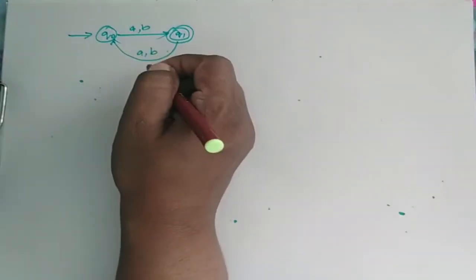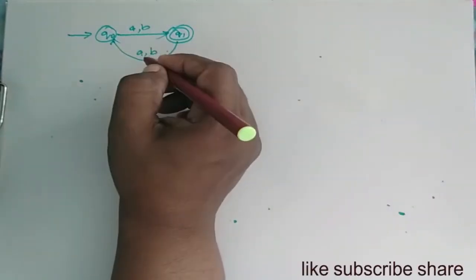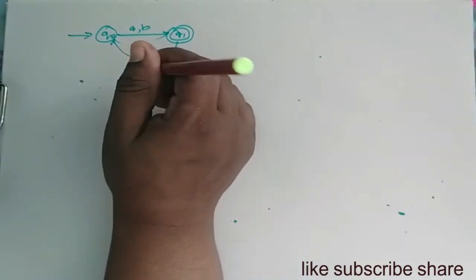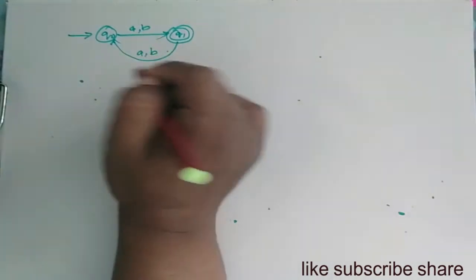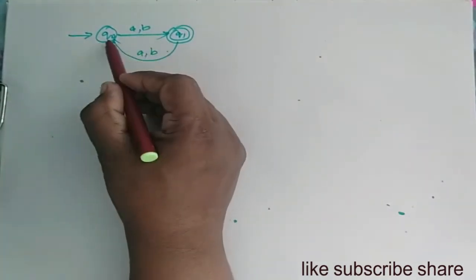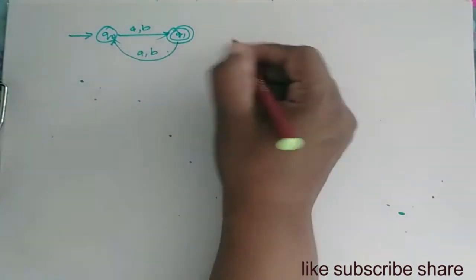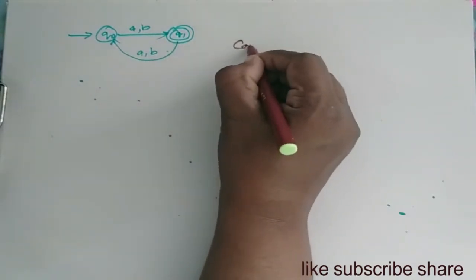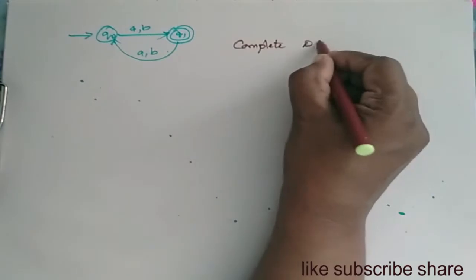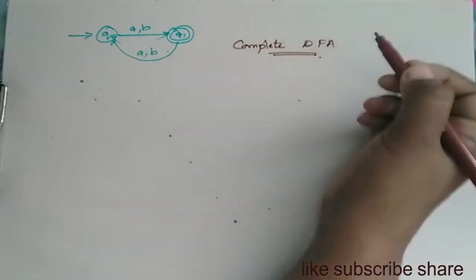Now we check this DFA for completeness. Q0 accepts A and B. Q1 accepts A and B. So it is a complete DFA.